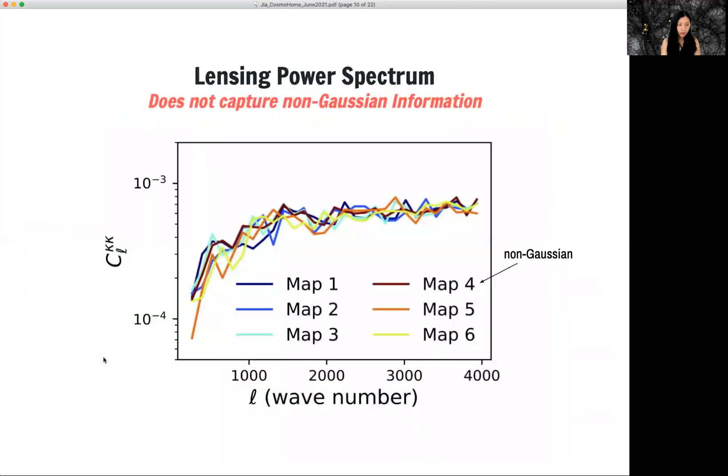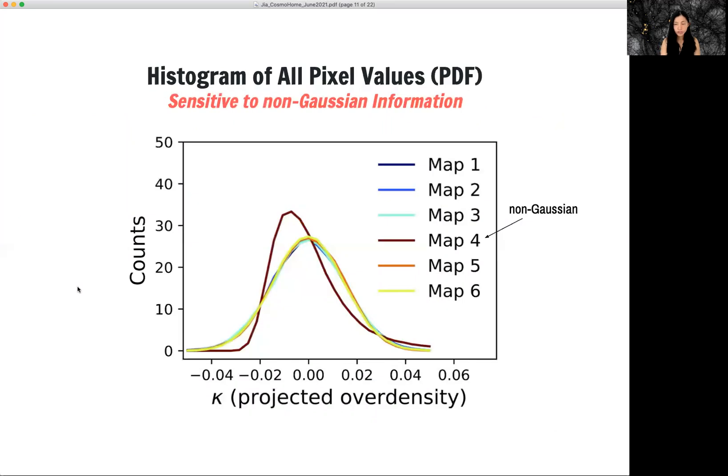If we only look at the power spectrum of all these maps, they look almost the same. But if we change a method, the method to look at them, for example, a histogram of all the pixels, or the PDF of the map, you can see that all five Gaussian maps, they are very Gaussian looking.